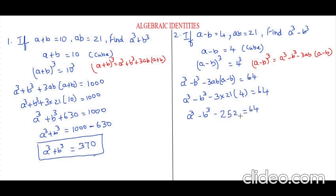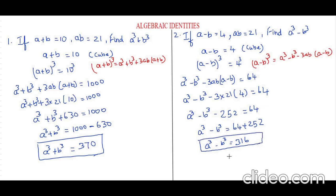Now let's take this negative 252 to the other side. Whenever a negative from the left hand side goes to the right hand side, it becomes positive. So, a cube minus b cube equals 64 plus 252, and 252 plus 64 is 316. Our question was find a cube minus b cube, and we have got the answer: a cube minus b cube is 316. Isn't it easy? We just need to apply the identity. If you have any queries, you can comment in the comment section, and for more tips and tricks, do like and subscribe to my channel. Thank you.